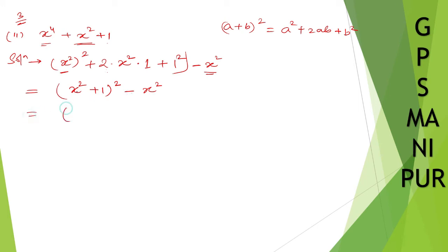This one I can write down as a square minus b square. So x square plus 1, this is a plus b, and x square plus 1 minus x. Let me write down in order. So x square plus x plus 1, and this one also in order x square minus x plus 1.